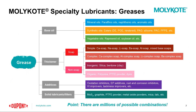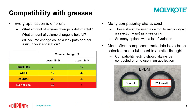Greases can become very complex. Breaking it down, the base fluid can be mineral oils, synthetic oils, or vegetable oils — each of which can be broken down further. The same applies to thickeners: you have soap and non-soap categories, including lithium soaps, lithium complex, and aluminum, among many others. There are millions of possible combinations, which is why application engineers and lubricant specialists are here to answer any questions you might have.